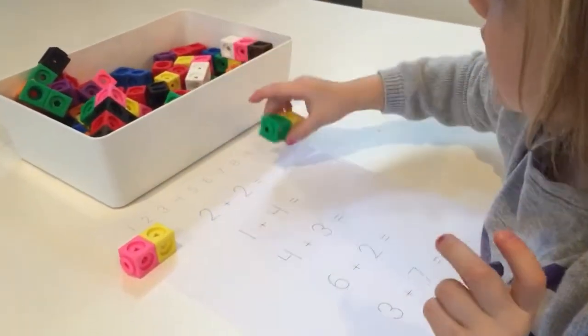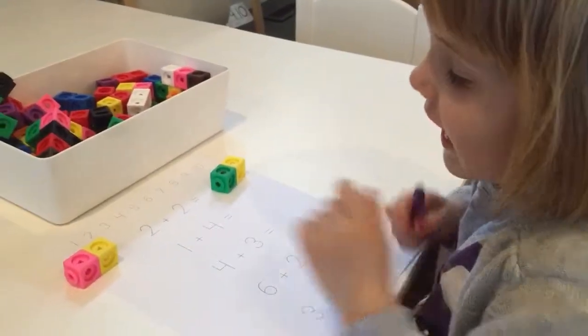Get one of the two blocks. Yeah, and put them over there. Then what do you do? Count them together. Yes.